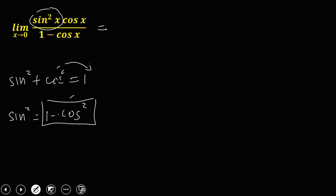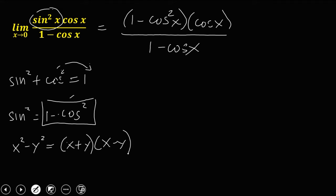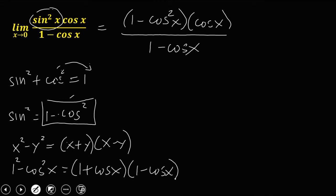Our new equation is 1 minus cosine squared x times cosine x over 1 minus cosine x. Using the difference of two squares — where x squared minus y squared factors as (x plus y)(x minus y) — we see that 1 minus cosine squared x is the same as 1 squared minus cosine squared x, which factors as (1 plus cosine x)(1 minus cosine x).